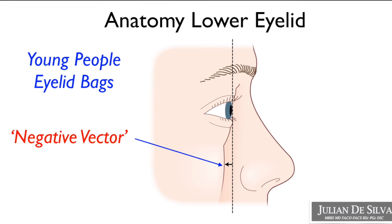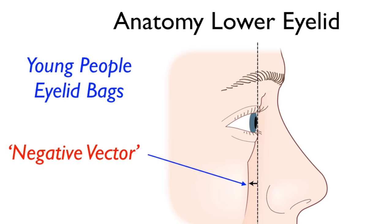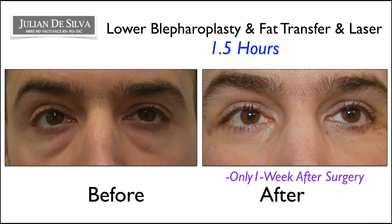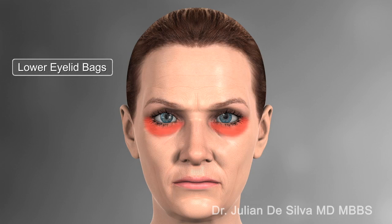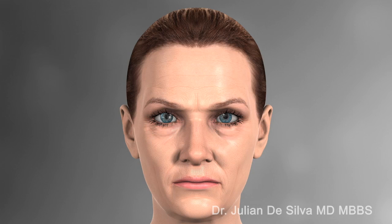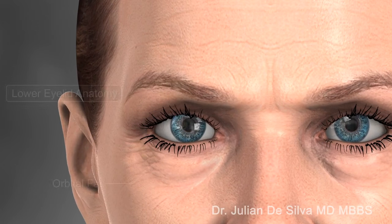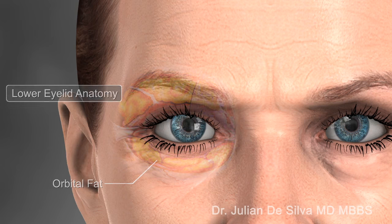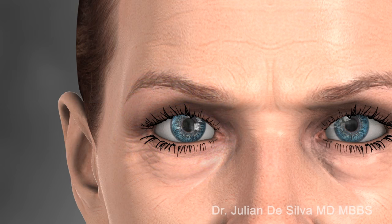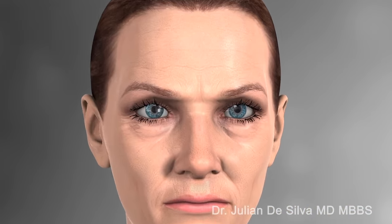In younger patients, the bags are really related to a phenomenon called negative vector, which is related to the position of the cheek in relation to the eyelid. As the lower eyelids age, some of the orbital fat, which acts as a cushion protecting your eye in everyday activities, can come forward in the lower eyelid and you can see that as a bulge.